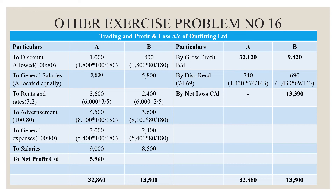Salaries are 9,000 rupees for Department A and 8,500 rupees for Department B. On totalling, we get a debit balance as net profit of 5,960 rupees for Department A, and a credit balance as net loss of 13,390 rupees for Department B. Grand totals on both sides are 32,860 for Department A and 13,500 for Department B.